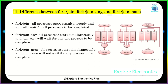What is the difference between fork-join, fork-join_any, and fork-join_none? Fork-join: all processes start simultaneously and join waits for all processes to complete. Fork-join_any: all processes start simultaneously and join_any waits for at least one process to complete. Fork-join_none: all processes start simultaneously and join_none does not wait for any process to complete.